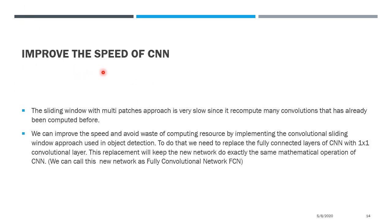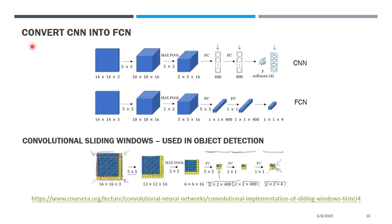If you pay more attention to the sliding window approach with the CNN, you will see that it is very slow because it wastes processing resources recomputing convolutions that have already been computed in previous patches. We can solve this problem by converting the convolutional neural network into a fully convolutional network. To do this, you just need to replace the fully connected layers with one-by-one convolutional layers. This conversion keeps the FCN performing exactly the same mathematical operations as the CNN, and the resulting FCN gains the property of convolutional sliding window, which makes it faster in real applications.